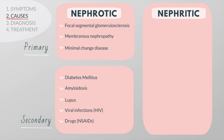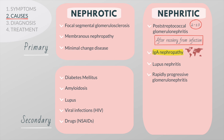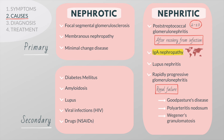Glomerulonephritis, on the other hand, most often occurs as a complication of a throat or skin infection with streptococcus. It typically develops in children between the ages of 2 and 10, some weeks after recovery from the infection. Other causes include IgA nephropathy, the most common cause of glomerulonephritis worldwide, and lupus. A subset known as rapidly progressive glomerulonephritis can present with severe and progressive renal failure. Examples include Goodpasture's disease, polyarteritis nodosa, and Wegener's granulomatosis.